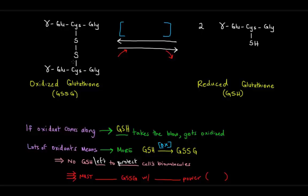Well, we need to find a way to take this oxidized glutathione and remake this reduced glutathione. So, we must reduce the oxidized form of glutathione with NADPH. We reduce the GSSG with reducing power, which is, of course, NADPH.